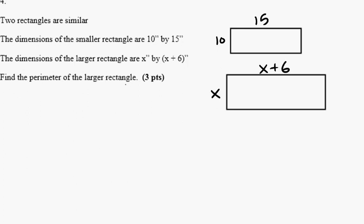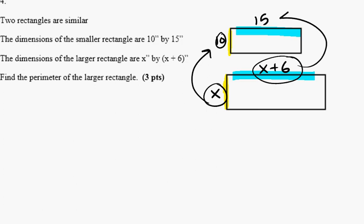Find the perimeter of the larger rectangle. So here the shorter side corresponds with the shorter side. The longer side corresponds to the longer side. So here we have a ratio of x is to 10 as x plus 6 is to 15.